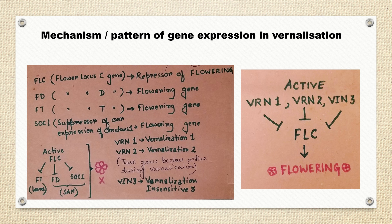Because FLC, as we studied earlier, is a repressor of flowering. When the repressor of flowering is inhibited, flowering occurs. This is the brief mechanism or pattern of gene expression in vernalization.